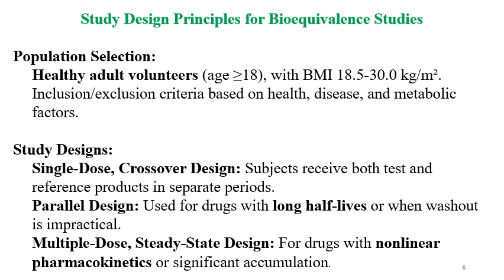For population selection, healthy adult volunteers aged more than 18 years are enrolled, with BMI of 18.5 to 30 kg per meter squared. Inclusion-exclusion criteria should be based on health, disease, and metabolic factors. Study designs include: single-dose crossover design, parallel design, and multiple-dose steady-state design.